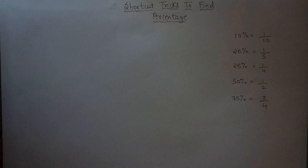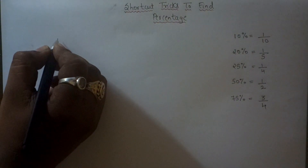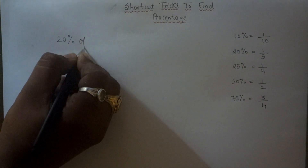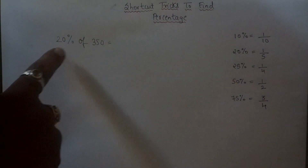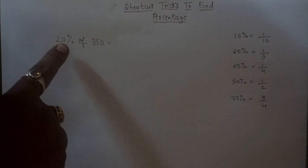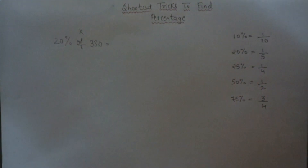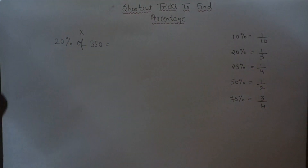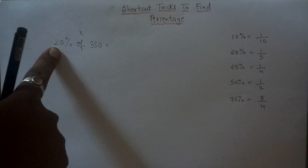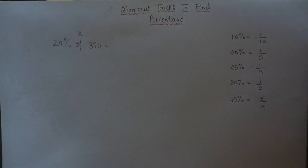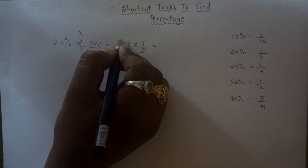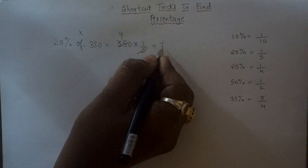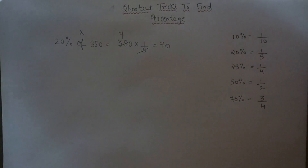Let's start with the first example: 20% of 350. This means 20 upon 100 into 350. Instead of solving that the long way, since we need 20% of any number, simply multiply that number by 1 upon 5. So 350 into 1 upon 5 gives us 70. So 20% of 350 is 70.